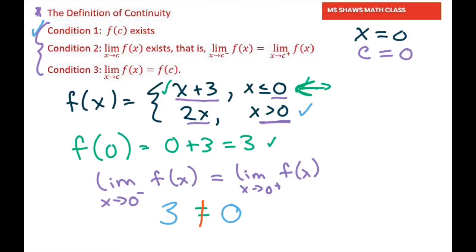So at zero, there's not going to be continuous. That is condition two fails. These two don't equal. Therefore, the limit does not exist. And when you graph it, you can see it better.